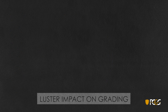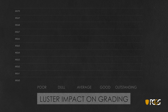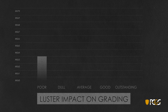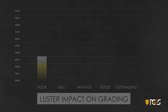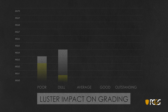In general, luster will have the following impact on the grade of a coin. Little or no luster will limit the grade to no higher than Mint State 63, with most grading in the 60 to 62 range, regardless of other factors such as surface preservation, strike, or eye appeal. A coin with flat or dull luster can grade no higher than Mint State 64, with most falling in the 61 to 63 range.